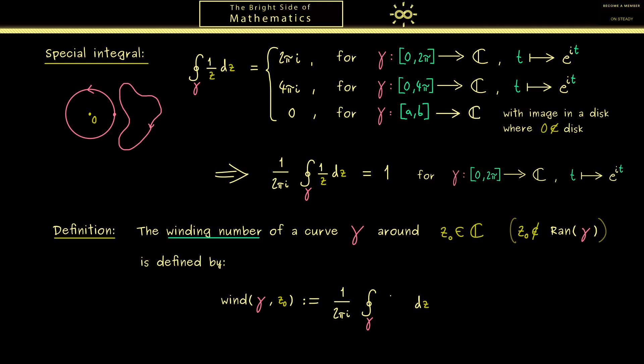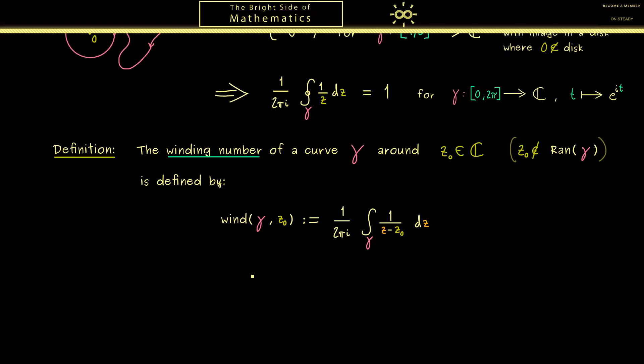Now as promised we define this new number by the integral above. Indeed, the only thing we have to change is to shift the function to translate it by the point z₀. So more precisely now we have 1/(2πi) times the contour integral of the function 1/(z - z₀). Now obviously this does not change anything from before because it's an easy substitution. Maybe we should also remove the circle here because the curve γ is very general. However, of course in the end we will apply the winding number just for closed curves. Nevertheless, the definition here works without any problems in this general form.